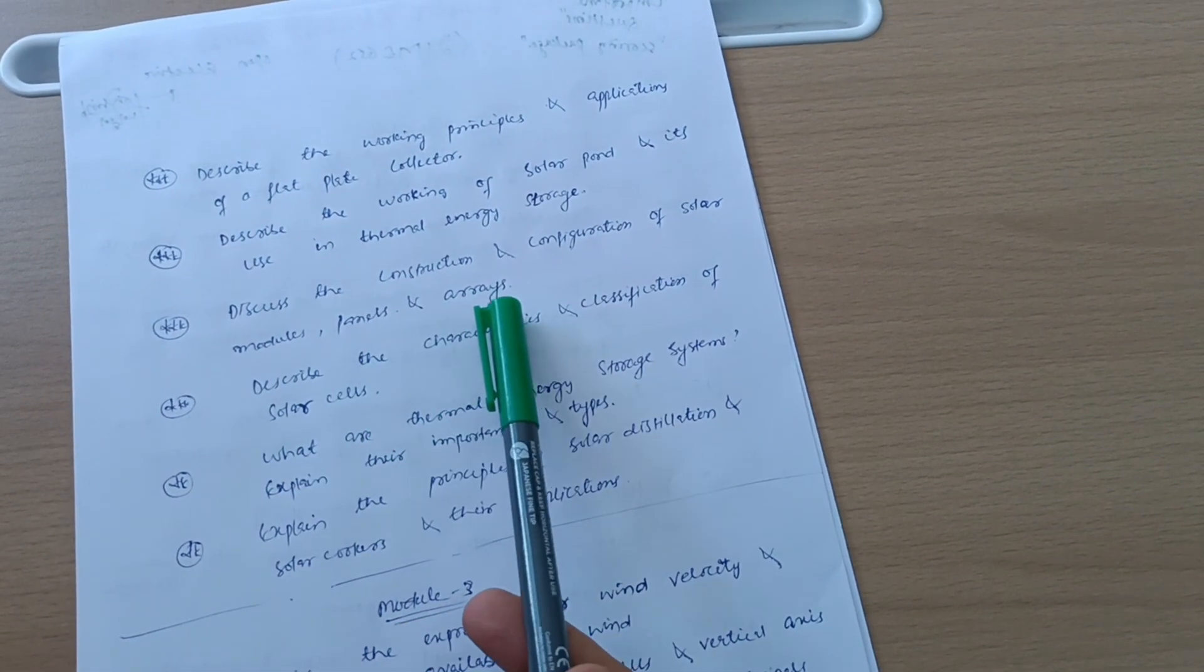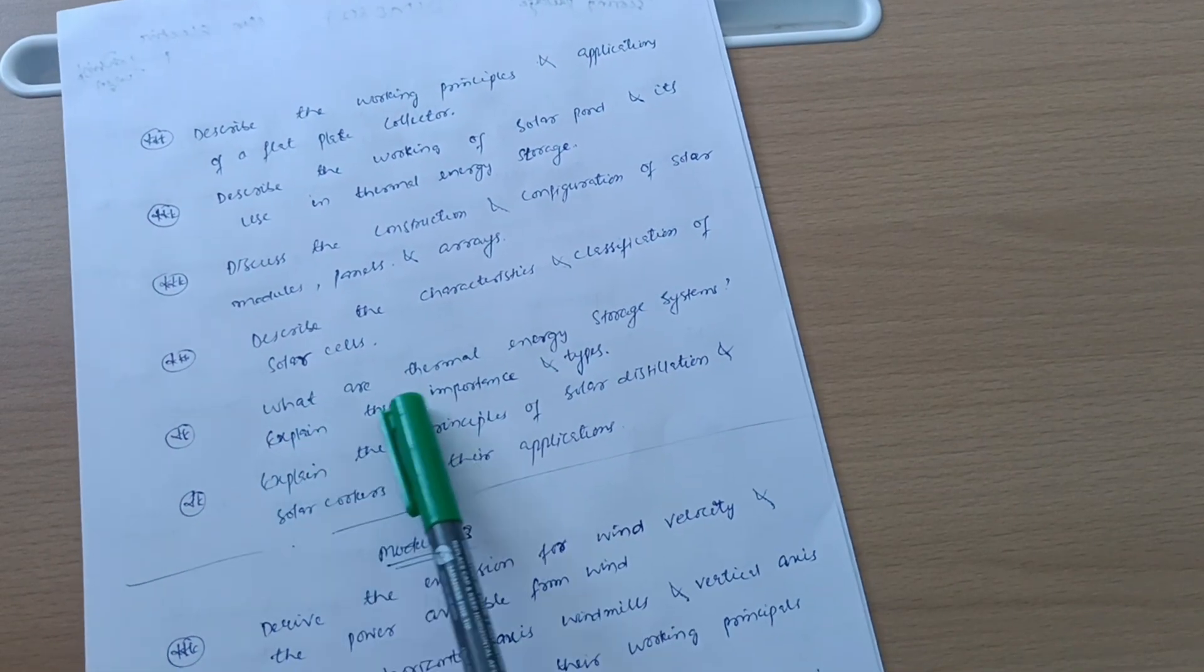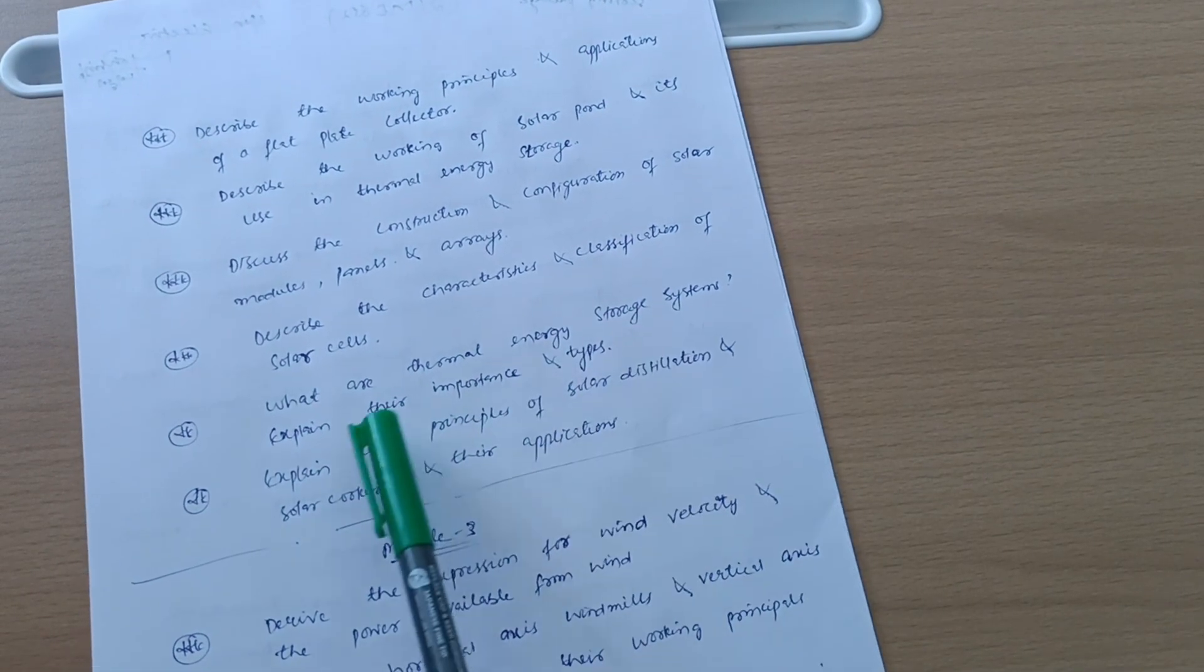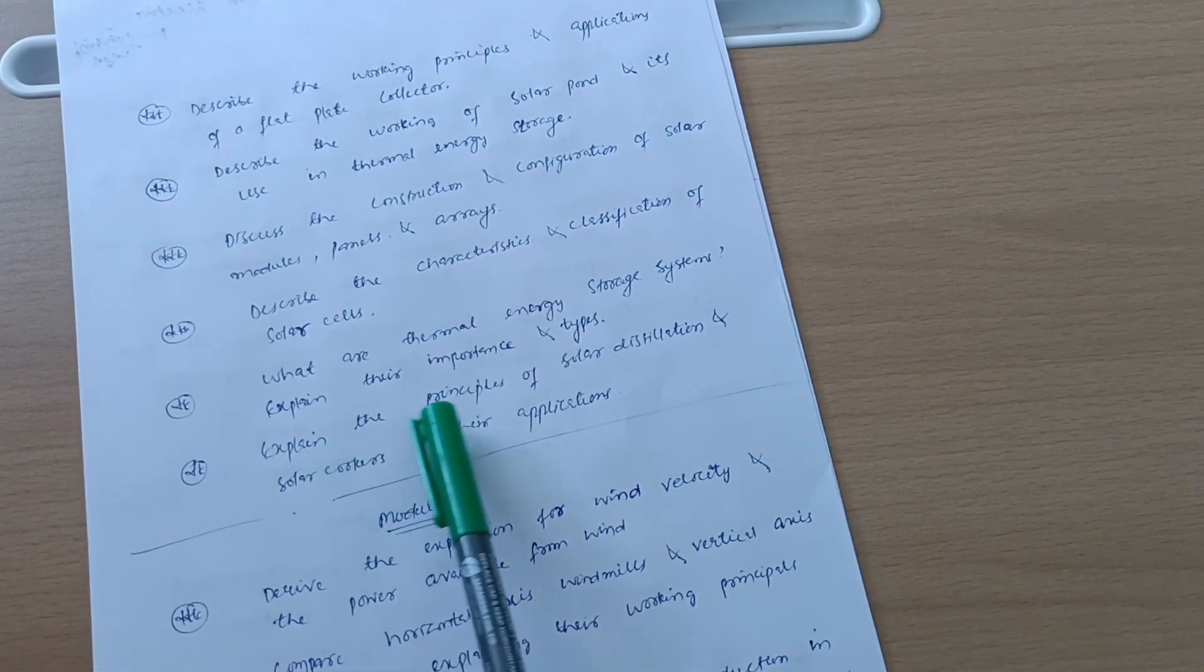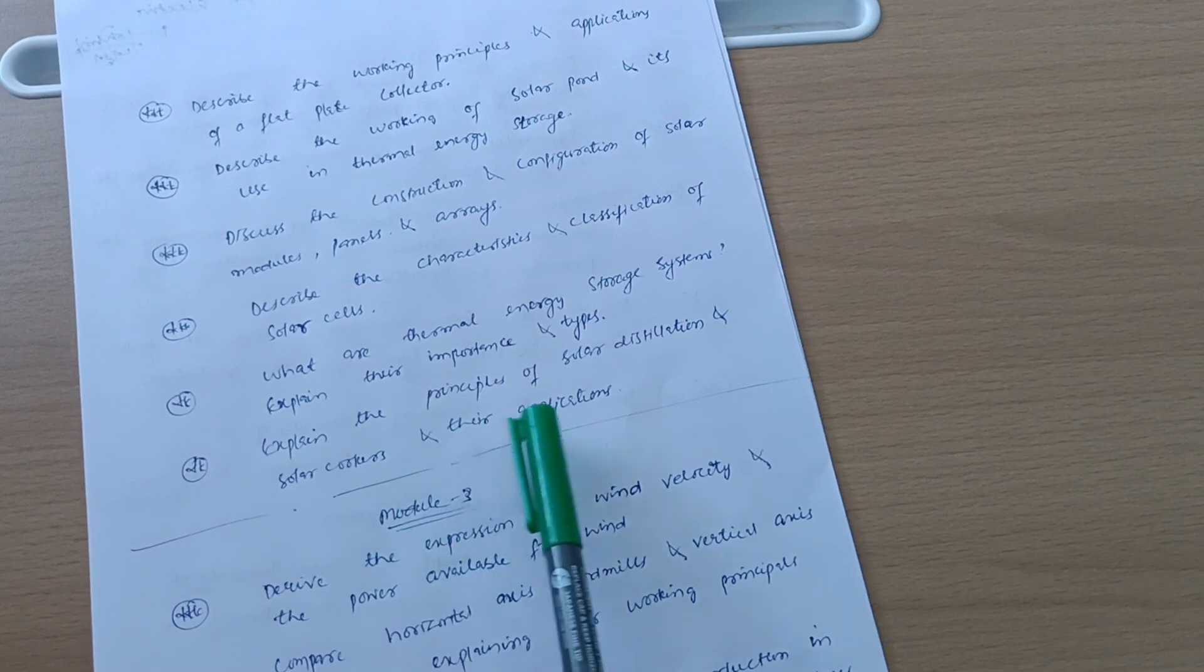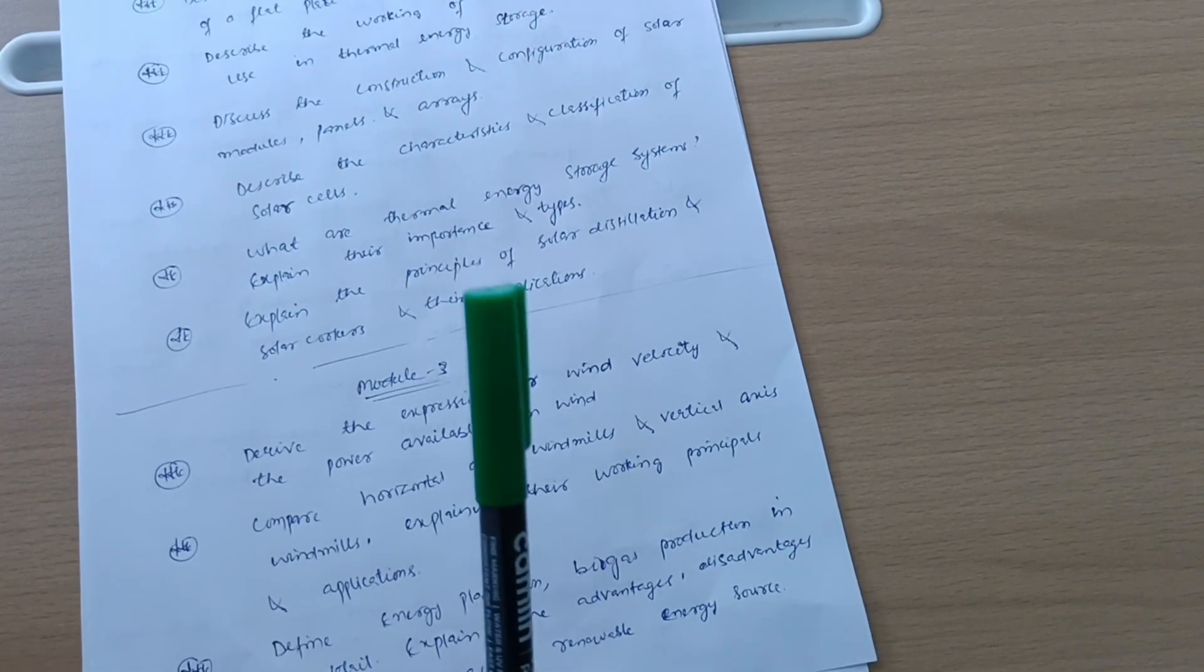Discuss the construction and configuration of solar modules, panels, and arrays. Describe the characteristics and classification of solar cells. What are thermal energy storage systems? Explain their importance and types - this may be a 10 marks question. Explain the principles of solar distillation and solar cookers and their applications, also a 10 marks question they may ask you in the examination.